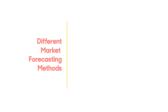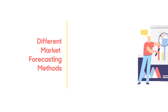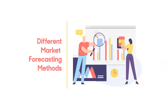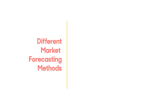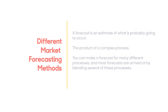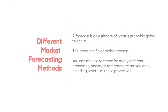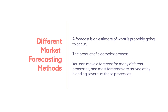A forecast is an estimate of what is probably going to occur. This sort of estimate, however, is neither arbitrary nor frivolous. It is the product of a complex process. You can make a forecast for many different processes, and most forecasts are arrived at by blending several of these processes.